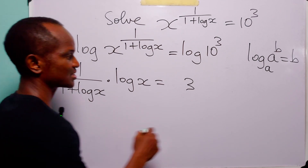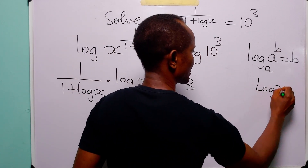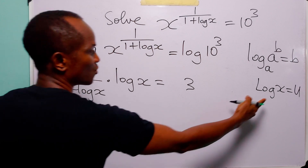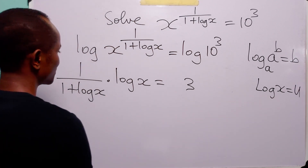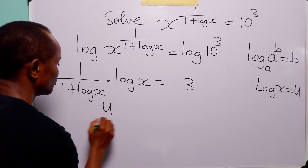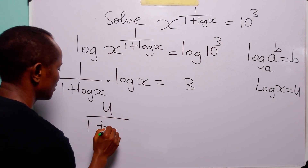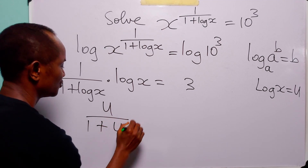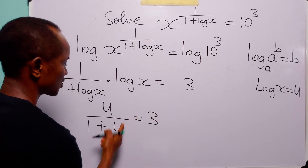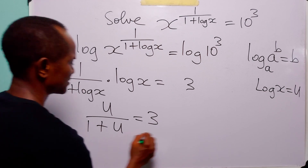Now here we have log x and here we also have log x. For simplicity let log x be equal to u. With this substitution this equation now becomes u over (1 + u) is equal to 3 times u... equal to 3, and of course we can cross multiply.